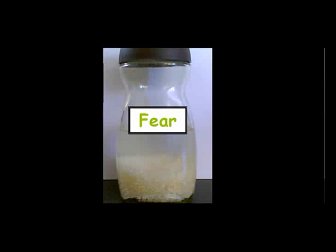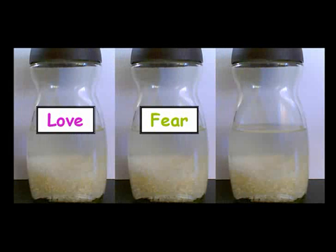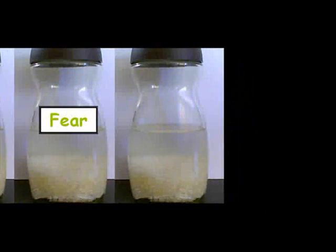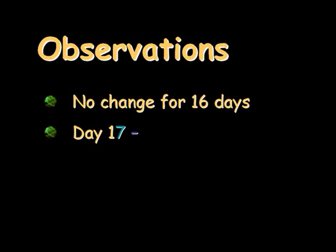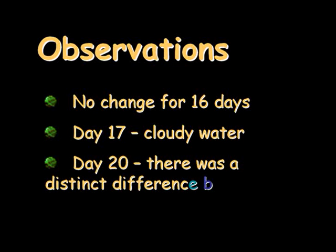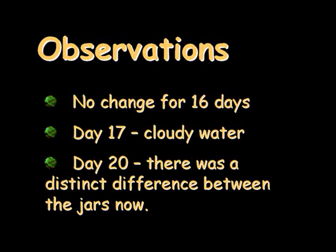After the 10 days of talking to the jars, we just left them to sit so the boiled rice could spoil and begin to contaminate the water. The water in the jars appeared relatively unchanged for 16 days. On day 17, the water in the jars began to get cloudy. On day 20, the water and the state of the rice in each jar was quite different.